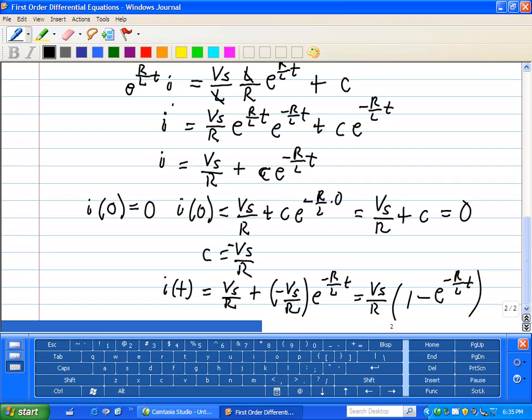So when t equals zero, this expression here is equal to zero. And when t is a very large number, as it approaches infinity, this approaches the steady state current of Vs divided by R.